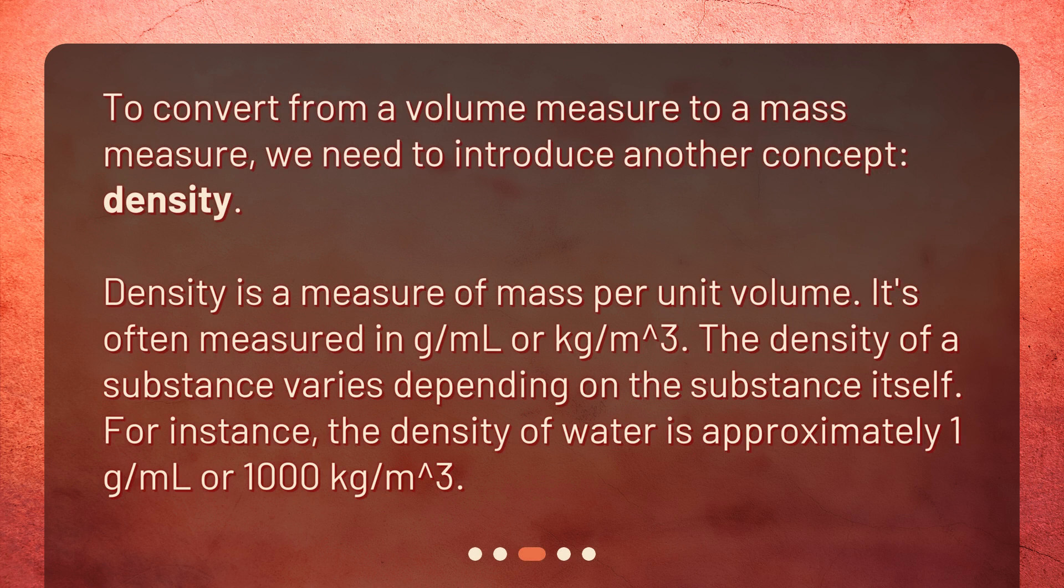To convert from a volume measure to a mass measure, we need to introduce another concept: density. Density is a measure of mass per unit volume. It's often measured in gram per milliliter or kilogram per cubic meter. The density of a substance varies depending on the substance itself. For instance, the density of water is approximately 1 gram per milliliter or 1000 kilogram per cubic meter.